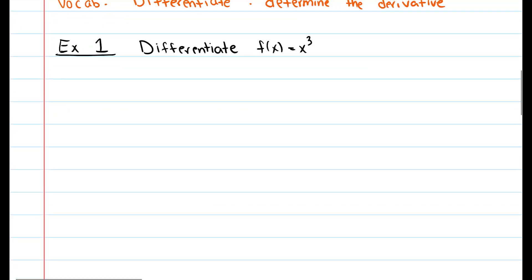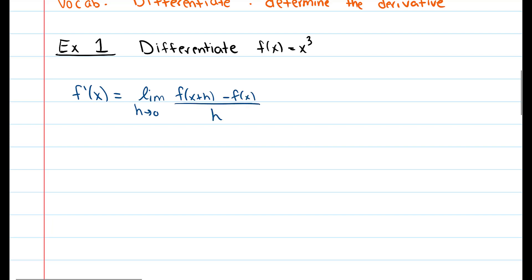In example one, we're going to differentiate f of x equals x cubed by using the definition of the derivative. So we have f prime of x is equal to the limit as h approaches zero of f of x plus h minus f of x, all divided by h. It's important to write down this definition because on an FRQ you might get partial credit for that. Now we're going to use this with our function, giving us x plus h cubed minus x cubed, all divided by h.